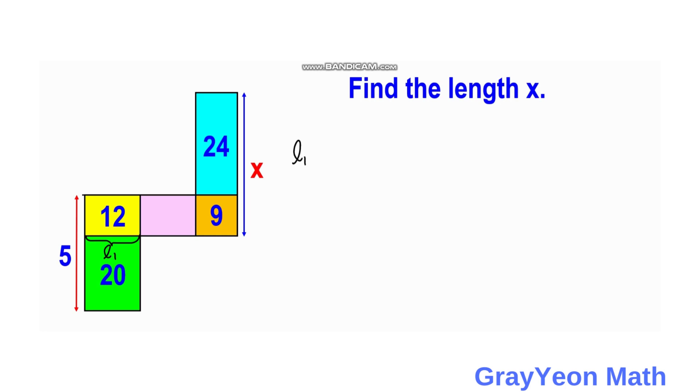So L1 is equal to area for the yellow, divided by, let us call this unknown as M. L1, this length, so 12 over M, is actually equal to the length. So area divided by the width M is equal to the length 1.